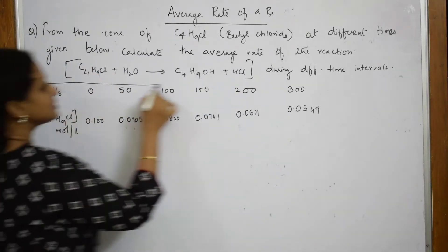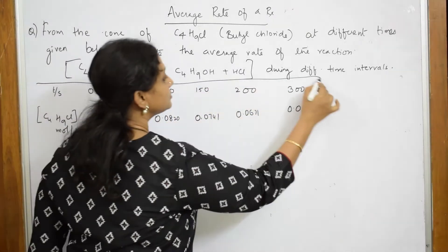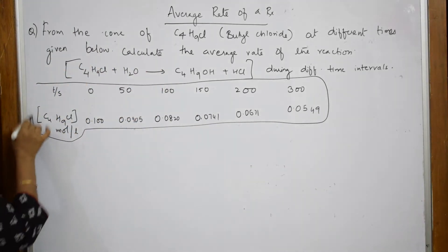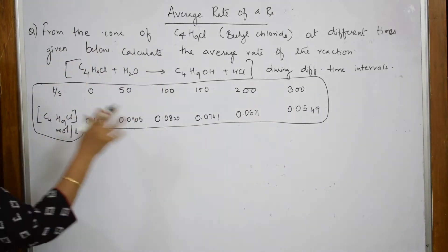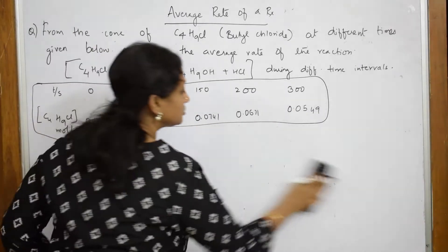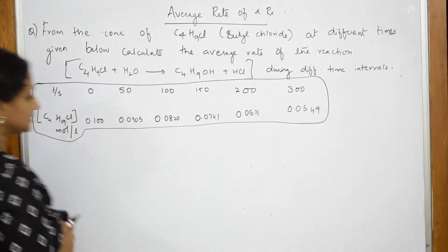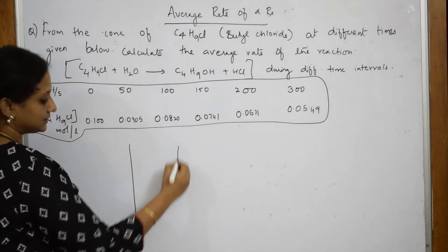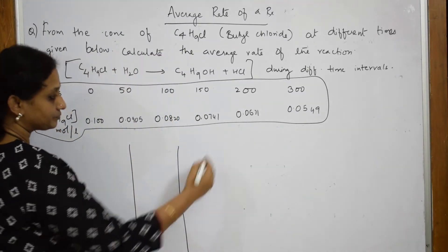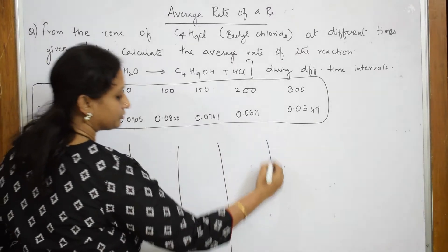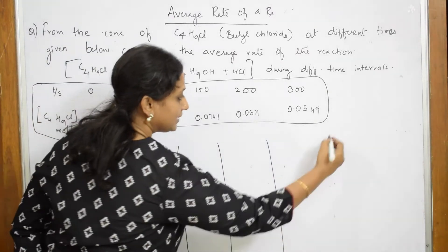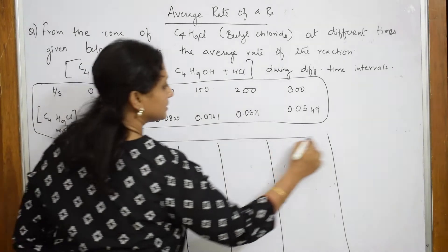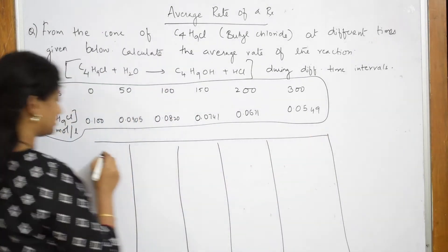When this data is given to you, the first important thing is you are going to make a table with columns. First one, second one, third, fourth, and the average. Let me divide this and make the columns.